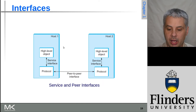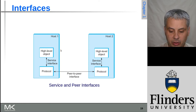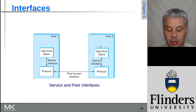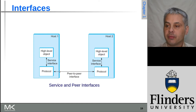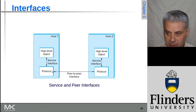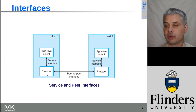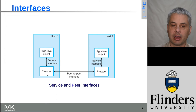Looking at that pictorially: if we have something higher up in the network layer — a high-level object on one host wanting to communicate with a high-level object on a second host — those objects both use the service interface down to the protocol below them. Those protocols then implement the peer-to-peer interface between them, which may use the next layer down to achieve that. These two different roles are really worth understanding clearly.